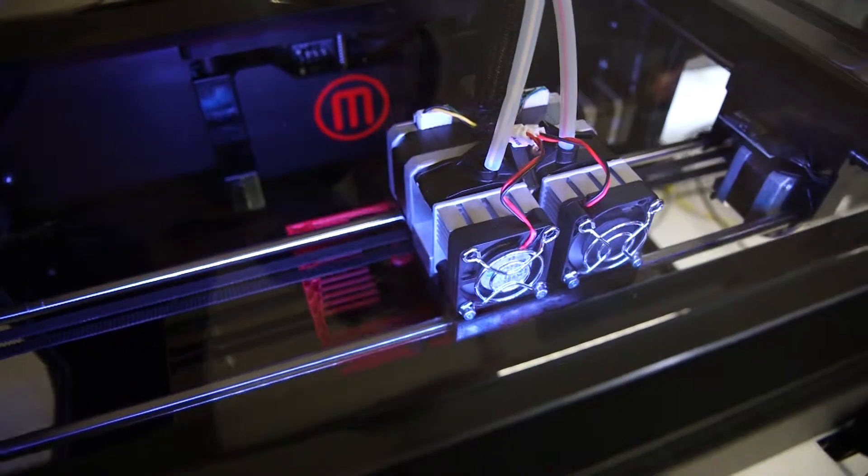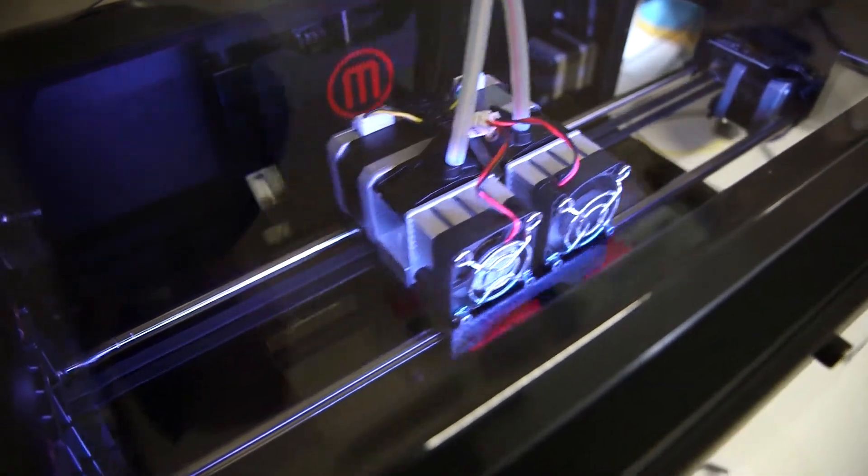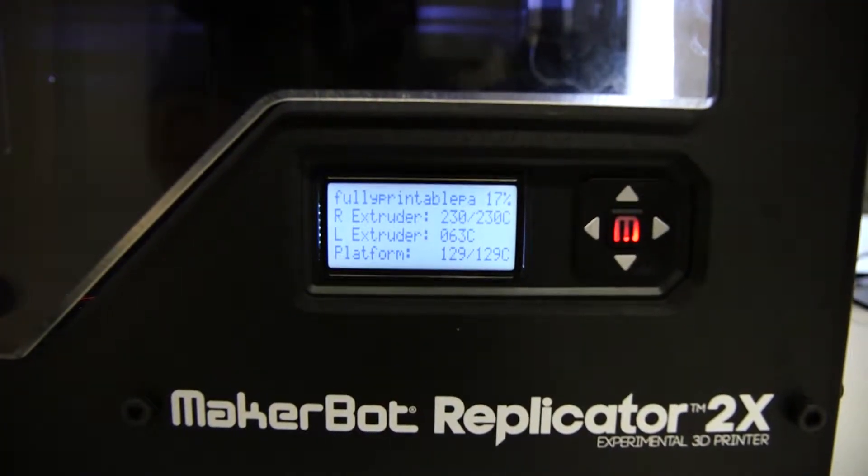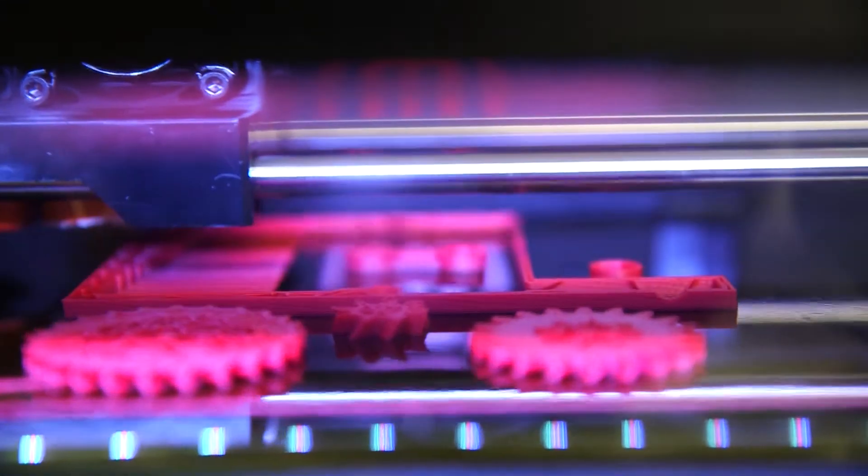3D printers are essentially like a normal domestic printer except they have a y-axis, so they print up and down as well as left and right. You've got plastic that goes through an extruder, gets heated up, and your 3D object is made in layers. The layers are placed on top of each other and stick together to create a final object.